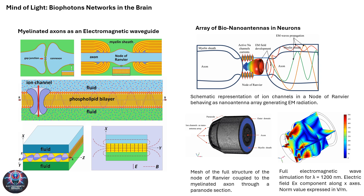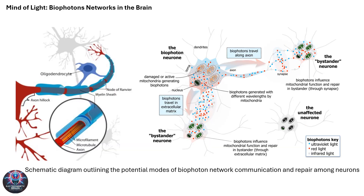Biophoton release is a key element in electromagnetic consciousness theories, as it involves the brain's utilization of light for communication. The left diagram shows how neurons emit biophotons during metabolic processes, which then interact with microtubules. This interaction may enable quantum entanglement, facilitating long-distance neural communication across the brain. The central schematic emphasizes how myelinated axons act as electromagnetic waveguides, efficiently channeling biophotons throughout the neural network. This waveguide action supports the idea that light-based communication might contribute to the synchronization necessary for conscious experiences. Human brains could potentially transmit billions of biophotons per second, forming a complex network of light-based communication that underpins the electromagnetic field of consciousness.